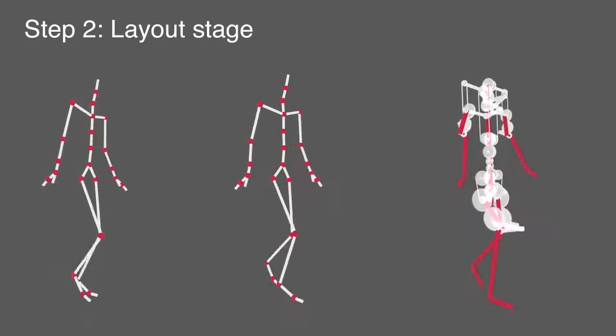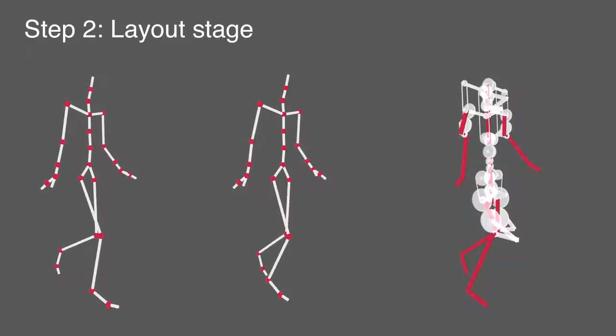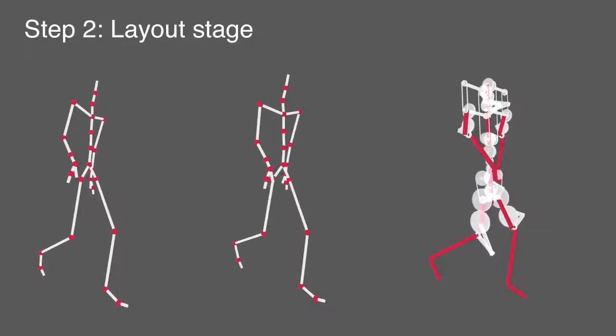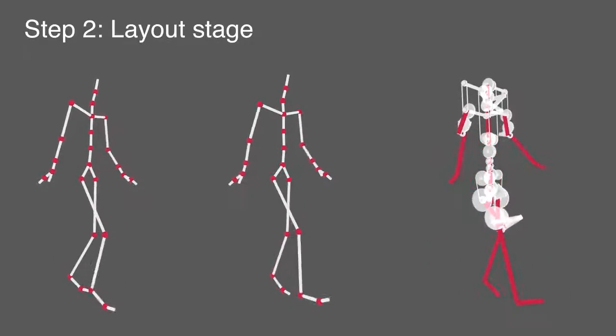Then, in the layout stage we generate a physically valid layout of the mechanical components that realizes the simplified target motion and respects the proportions of the bones in the input figure.